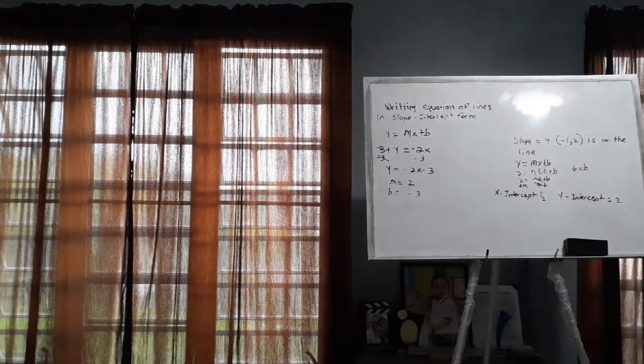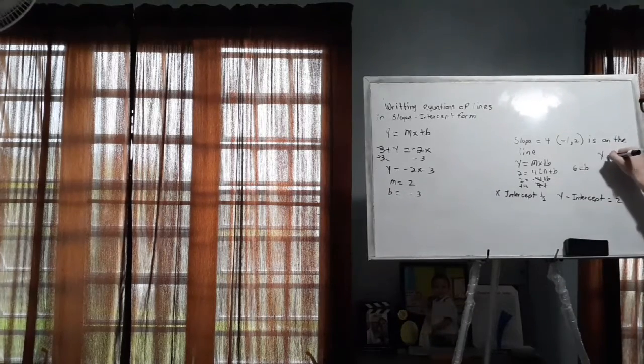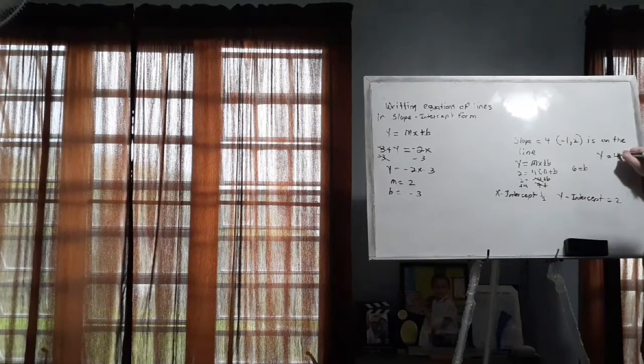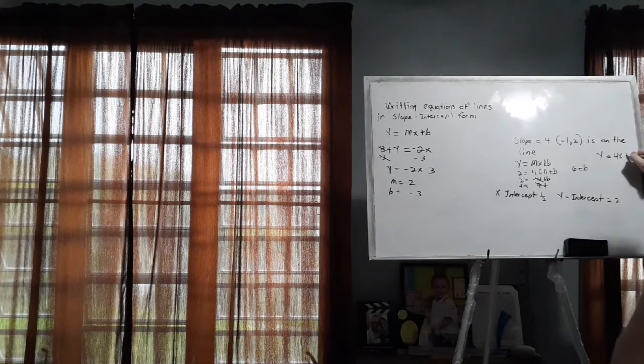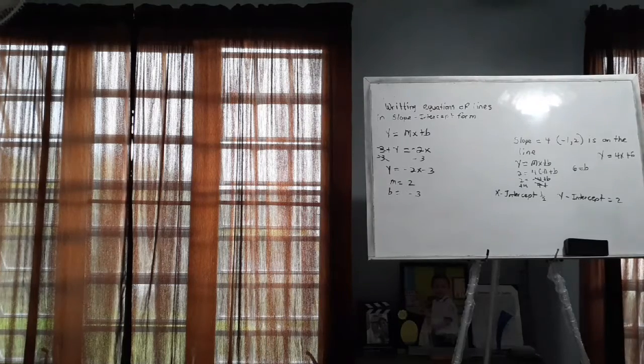So our y-intercept is 6. All I need to do is just write the rest of the formula. y equals, I know that our slope is 4, x. And our y-intercept is 6. So 4x plus 6. And that's it. Very easy, very simple, nothing out of the ordinary.